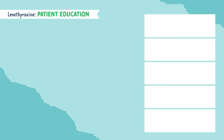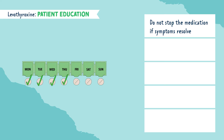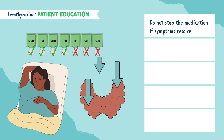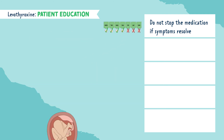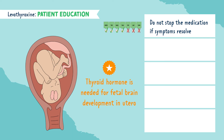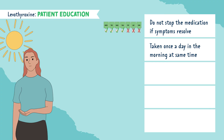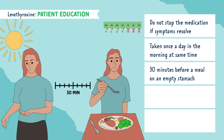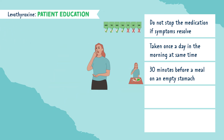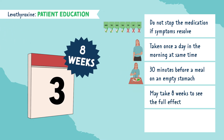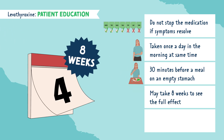Let's talk about patient education for levothyroxine. First, you do not want to stop taking the medication if symptoms resolve — especially in pregnant women with hypothyroidism, because thyroid hormone is needed for fetal development in utero. In terms of administration, it should be taken once a day in the morning at the same time, 30 minutes before a meal on an empty stomach. It may take eight weeks to see the full effect, so medication adherence is a must.